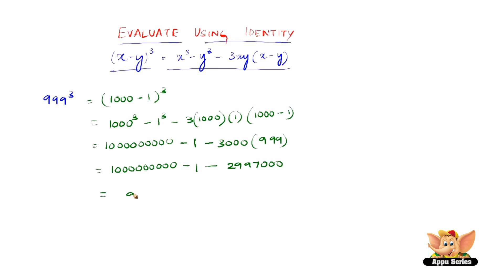Now subtracting this we get 997002999. So 997002999 is the expanded form of 999³.